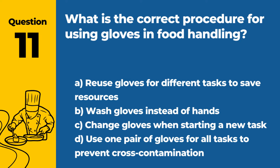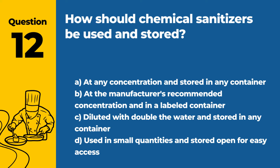Question 11. What is the correct procedure for using gloves in food handling? a. Reuse gloves for different tasks to save resources. b. Wash gloves instead of hands. c. Change gloves when starting a new task. d. Use one pair of gloves for all tasks to prevent cross-contamination. Answer c. Change gloves when starting a new task. Gloves should be changed when starting a new task to prevent cross-contamination.